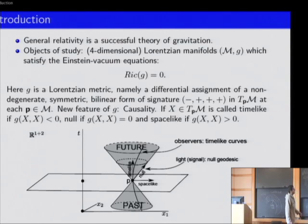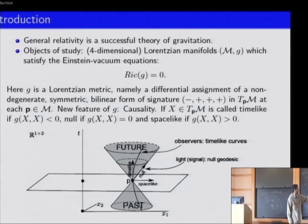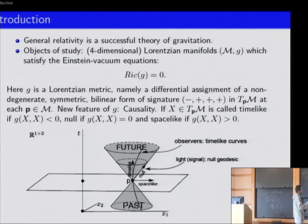By Lorentzian metric, I mean a differential assignment of a non-degenerate symmetric bilinear form of signature minus-plus-plus-plus at the tangent plane of any point.